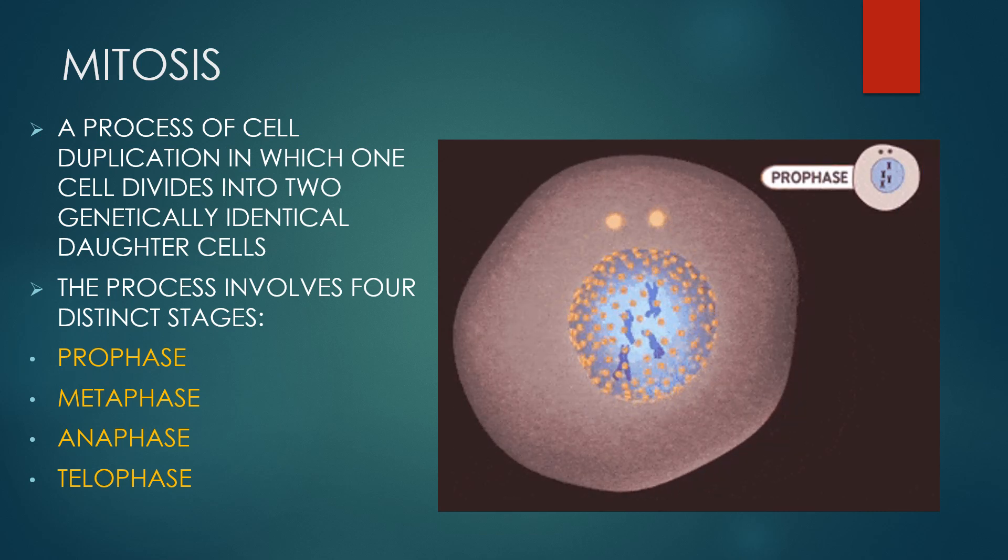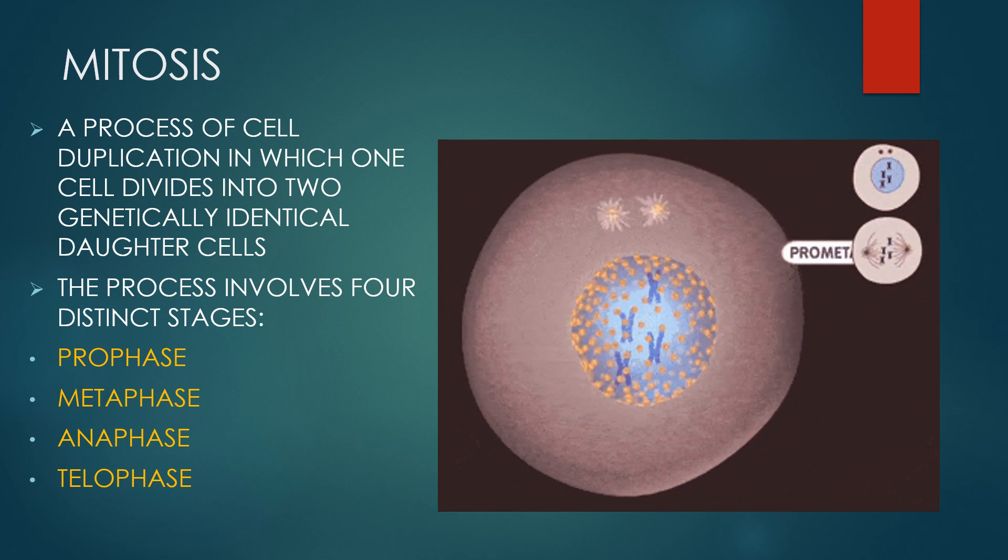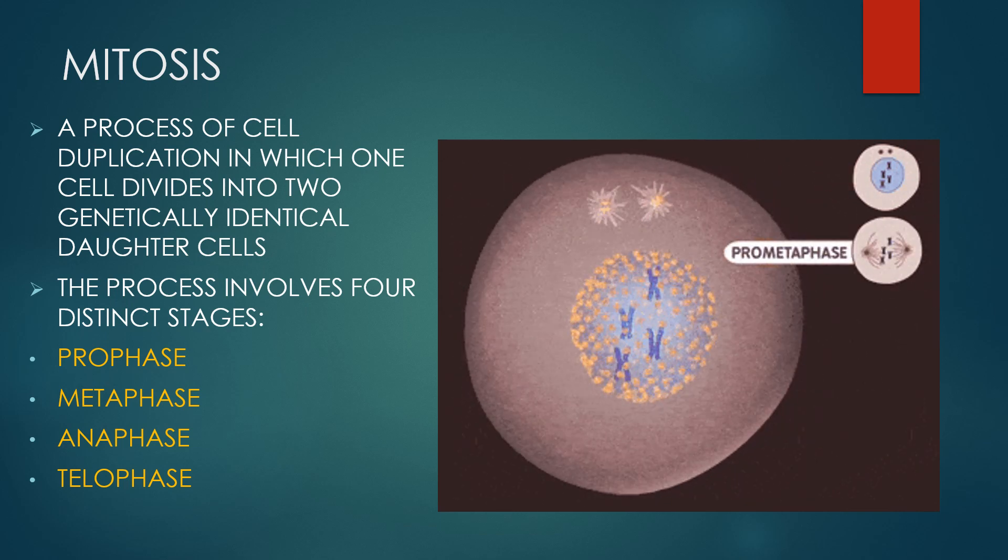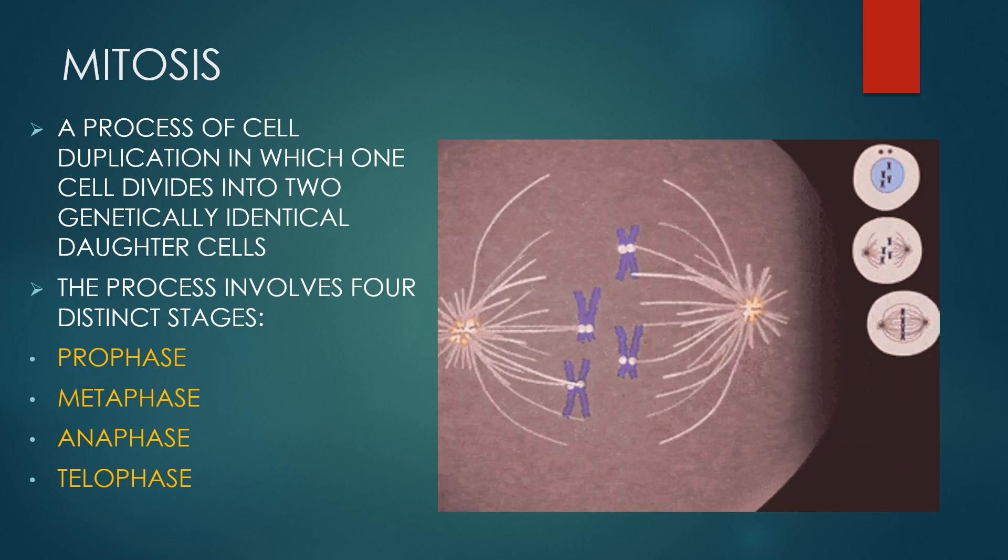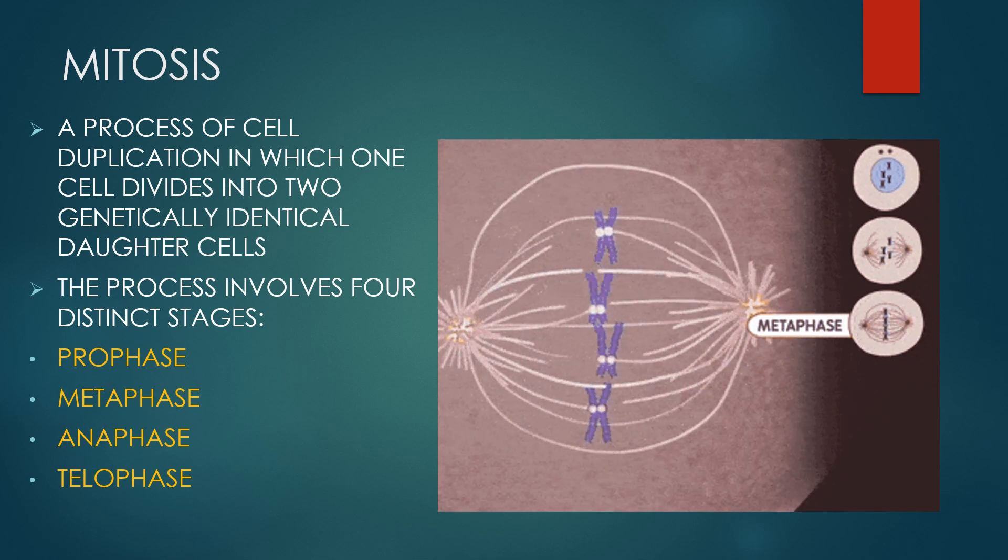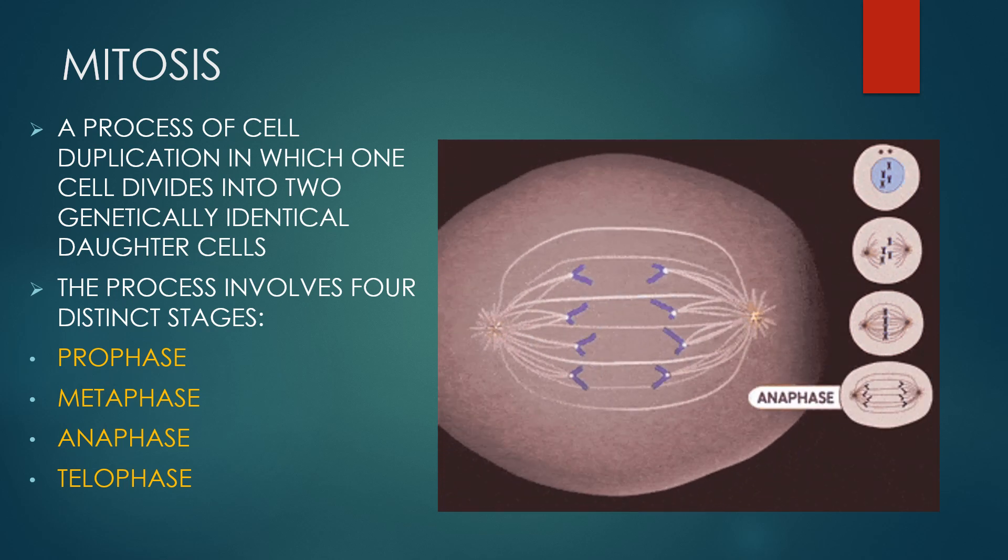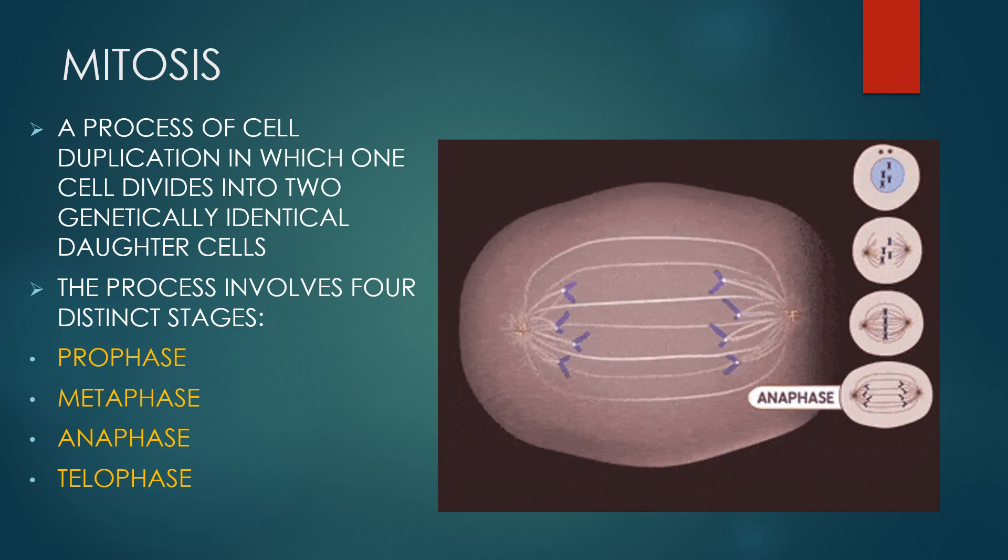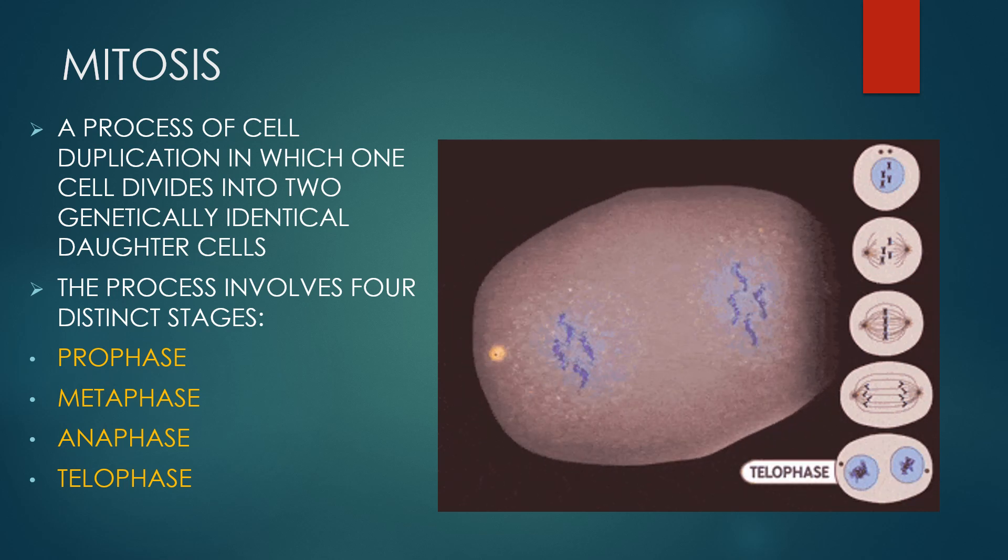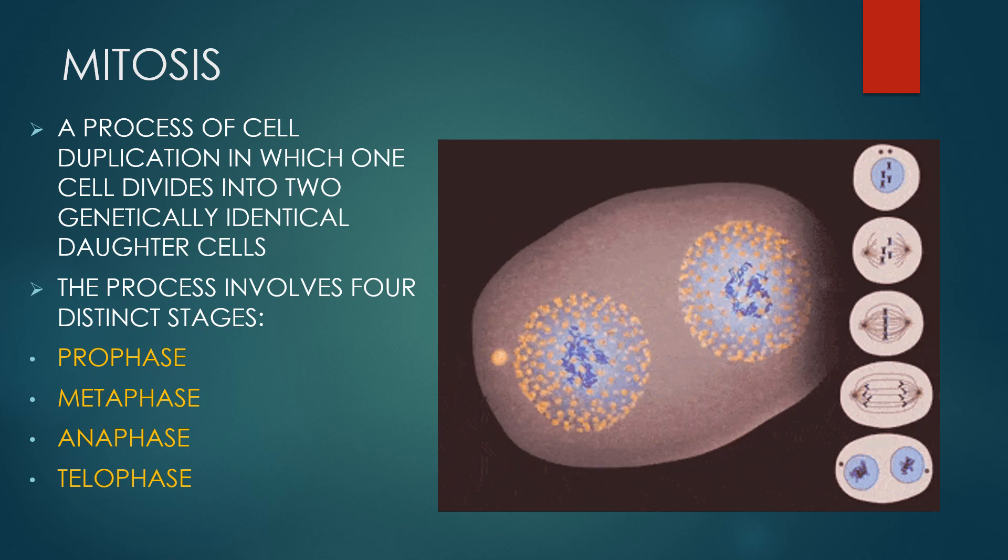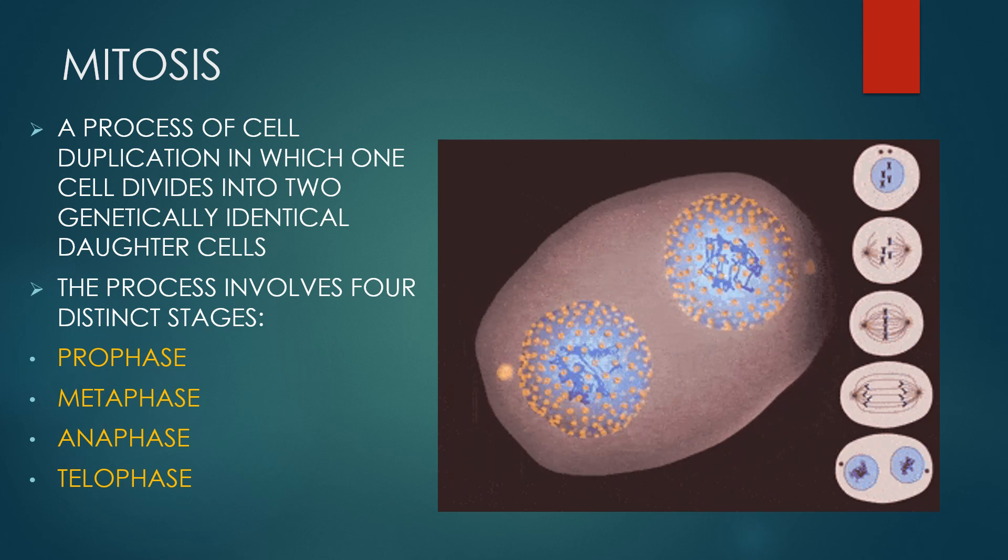Mitosis is a process where a single cell divides into two identical daughter cells also known as cell division. During mitosis, one cell divides once to form two identical cells. The major purpose of mitosis is for growth and to replace worn out cells. It is a process of cell duplication in which one cell divides into two genetically identical daughter cells. The process involves four distinct stages: prophase, metaphase, anaphase and telophase.